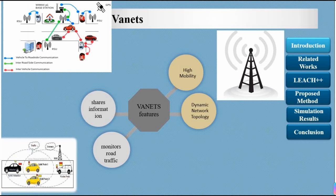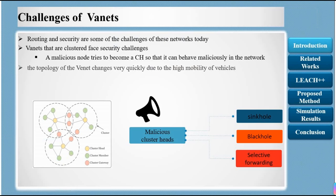A VANET monitors road traffic and shares information with neighbors. This network has roadside units. There are big challenges, especially in terms of security. Routing and security are some of the challenges of these networks today. VANETs that are clustered face security challenges, and malicious nodes try to become a cluster head so that they can behave maliciously in the network.